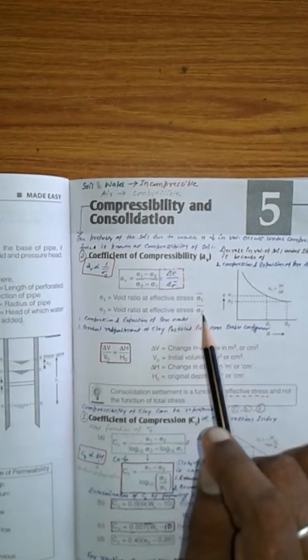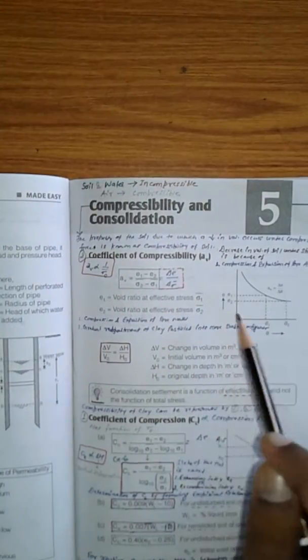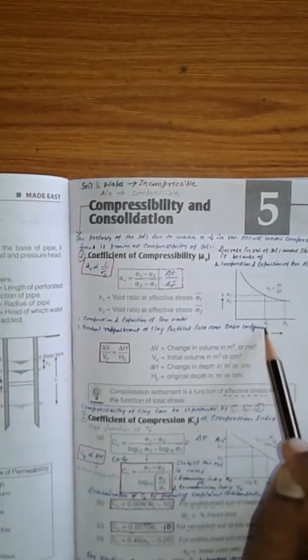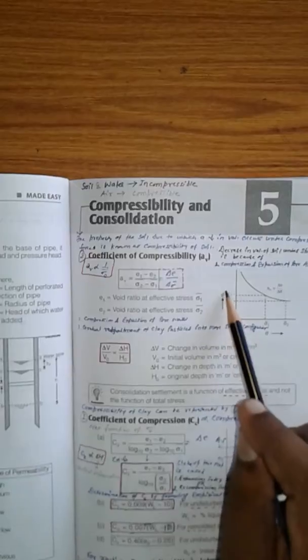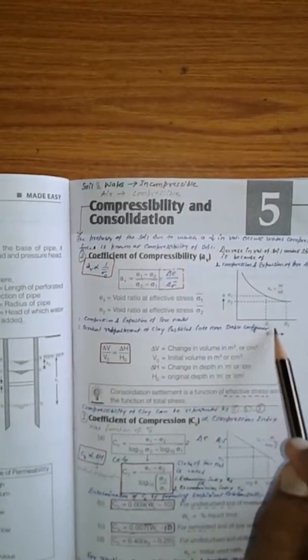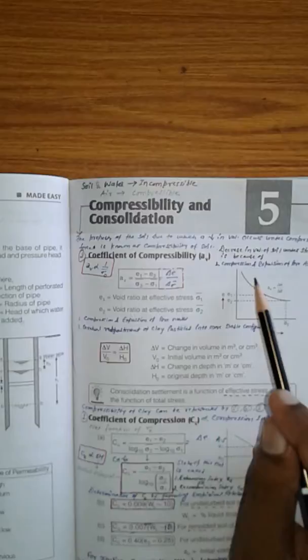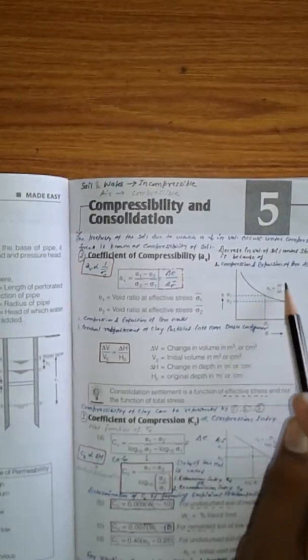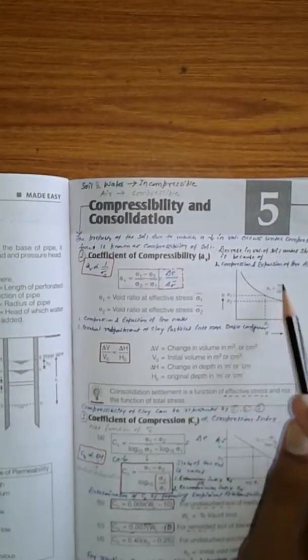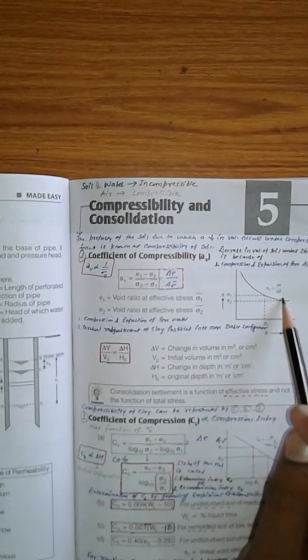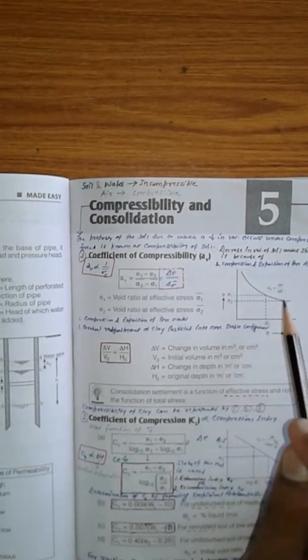And this is the graph between the plot of E, that is the void ratio, and effective stress sigma bar. And this is the slope, this is Av, that is del E upon del sigma bar, and this is coefficient of compressibility.